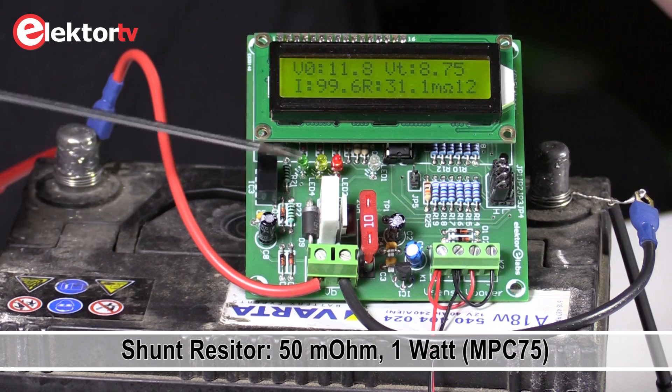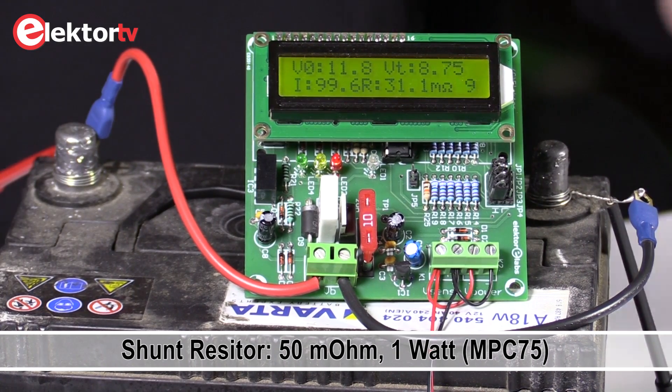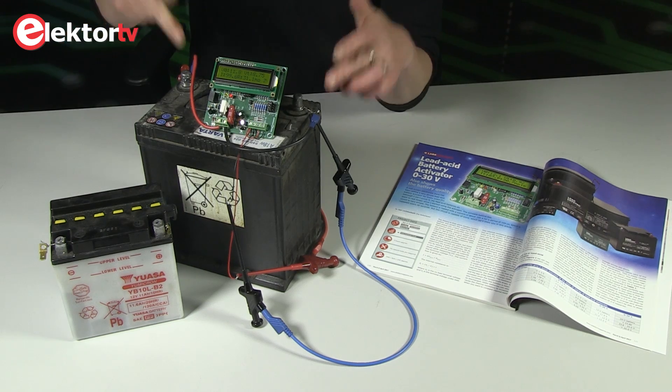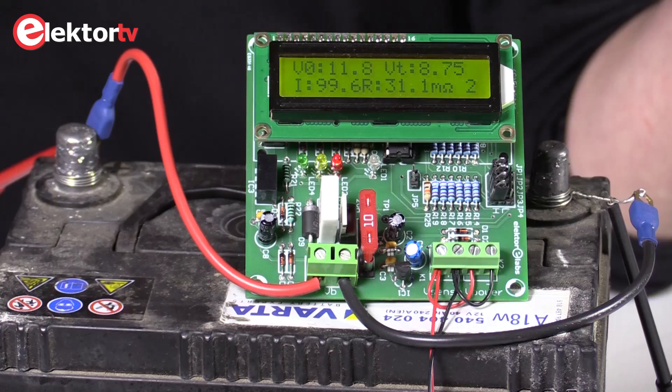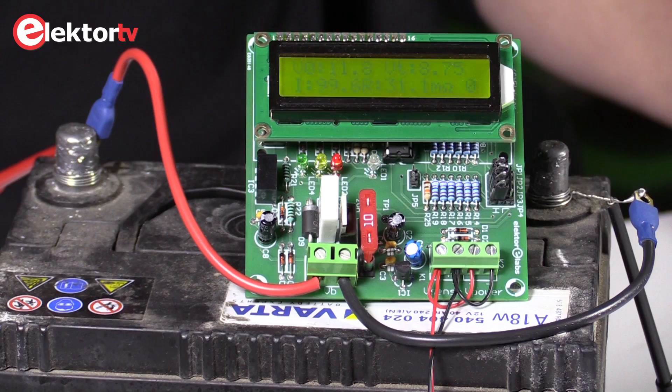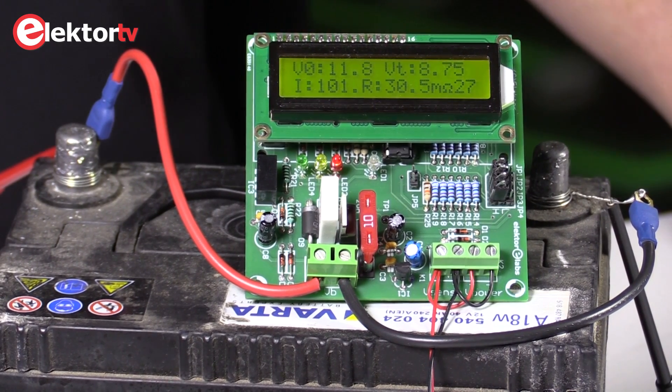The voltage across this resistor is measured, the voltage across the battery is measured. Around that the internal resistance of the battery is calculated. You can see it here on the display.